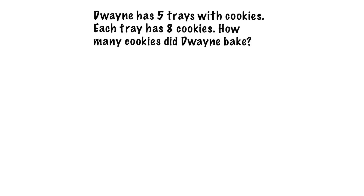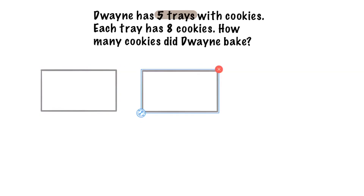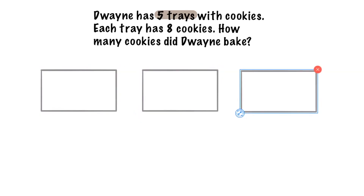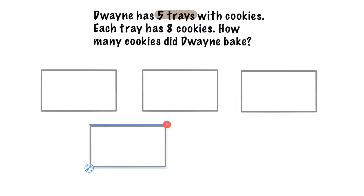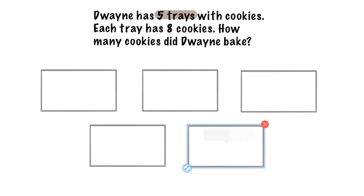Dwayne has five trays with cookies. We will highlight five trays because that's very important. Let's go ahead and make five trays: one, two, three, four, five.